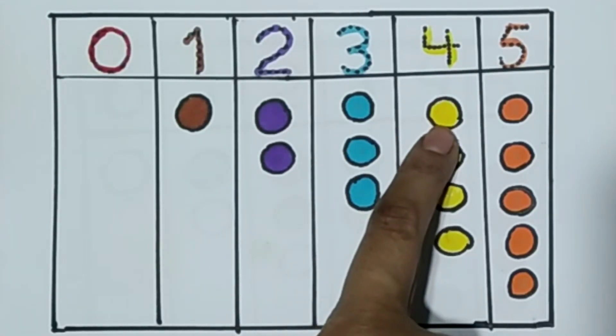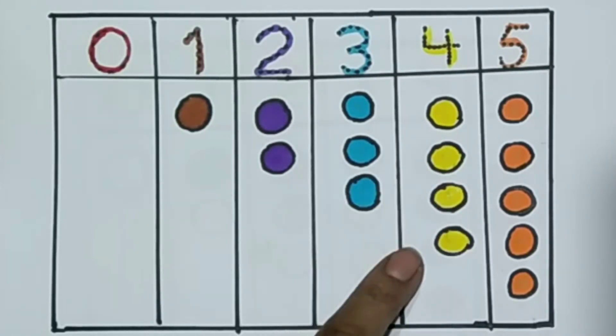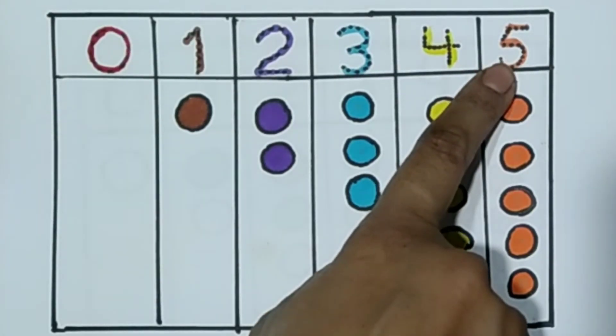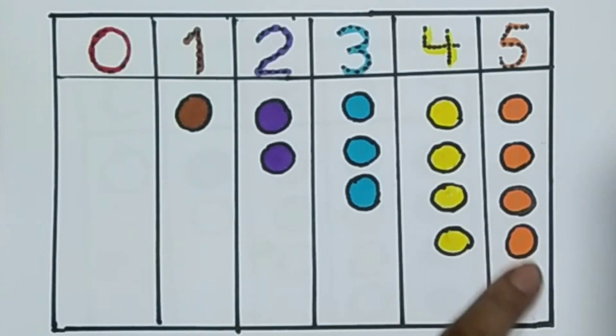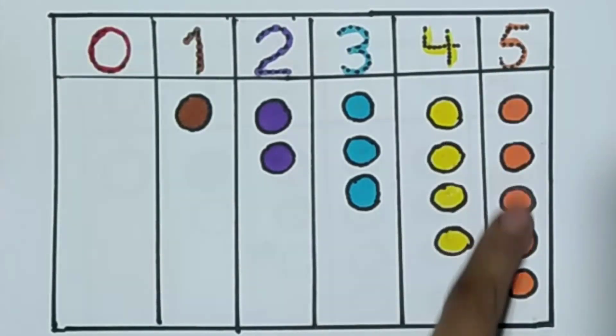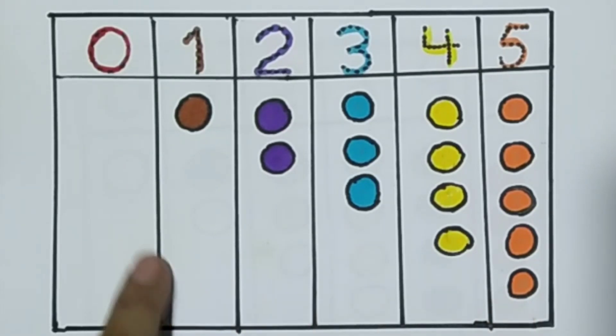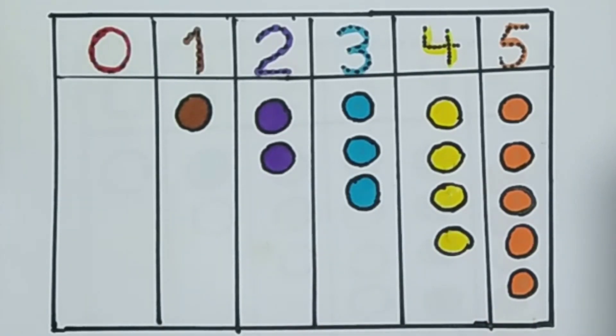Number 4. 1, 2, 3, 4. 4 circles. Number 5. 1, 2, 3, 4 and 5. Orange color. 5 circles. These are all circles.